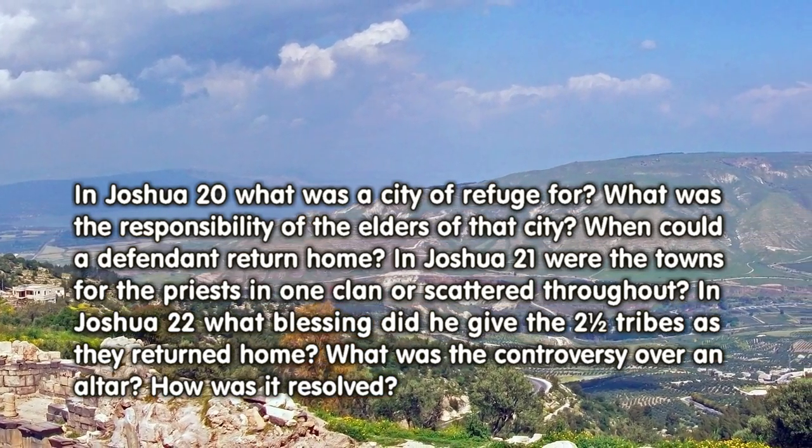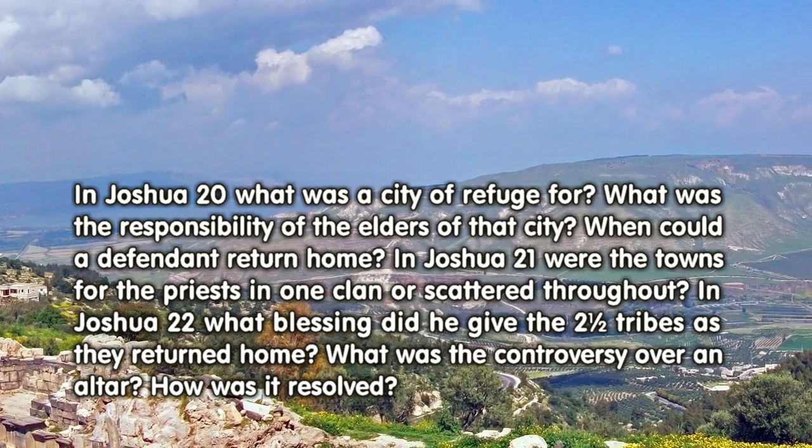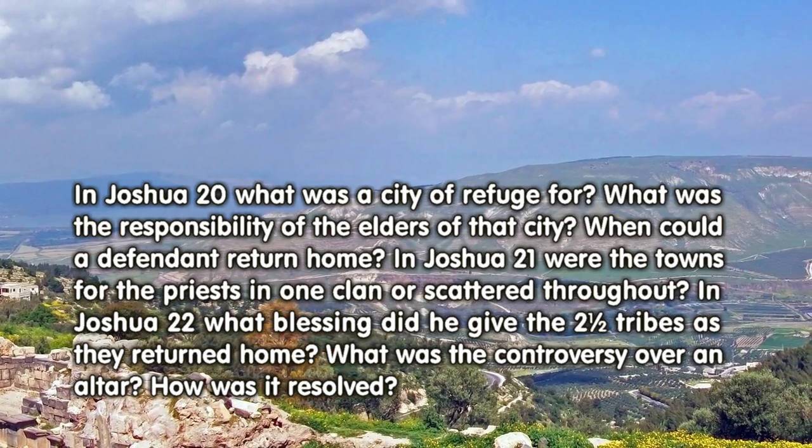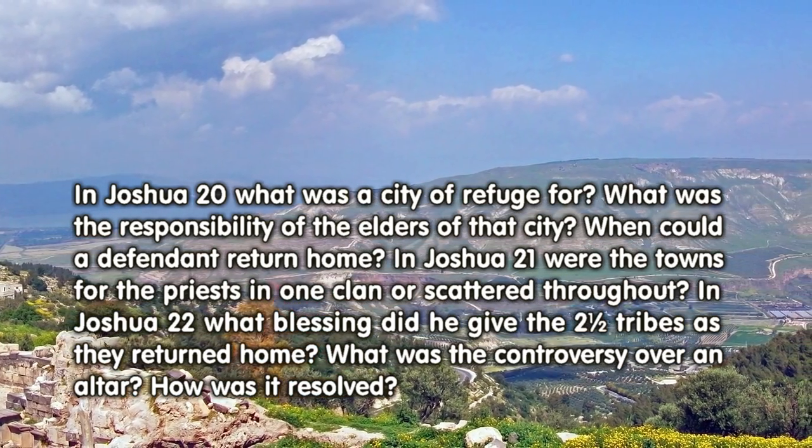In Joshua 21: Where were the towns for the priests in one clan scattered throughout?